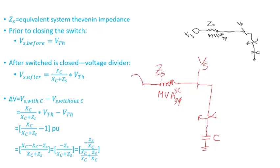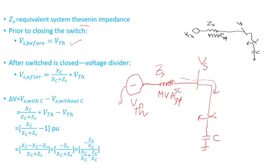The rest of the system we'll just write as the Thevenin equivalent — basically some voltage V-Thevenin. Keep in mind there are lots of things connected, so we just wrote the Thevenin equivalent of the system, where ZS is the equivalent Thevenin impedance. Prior to closing the switch, since no current will flow through the capacitor bank, VS is the same as V-Thevenin.